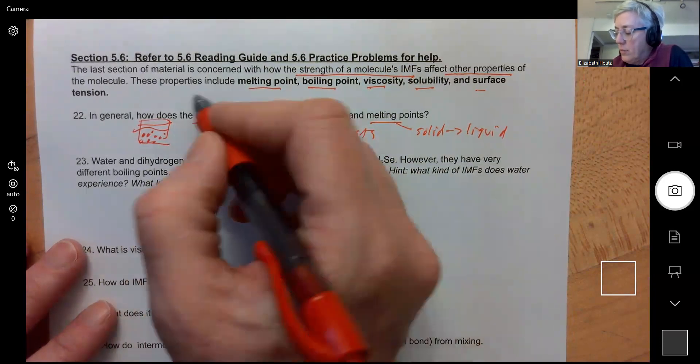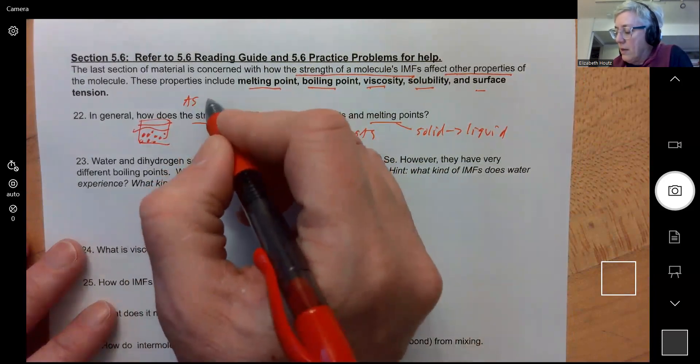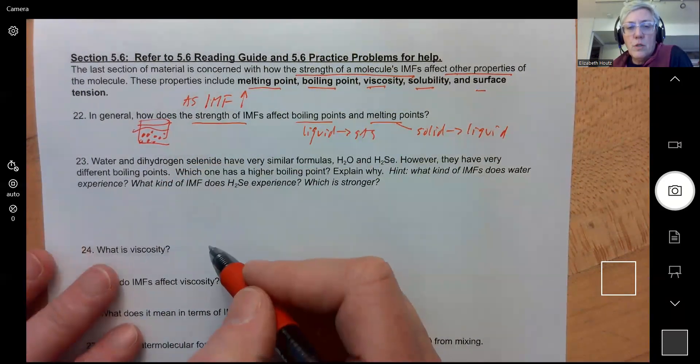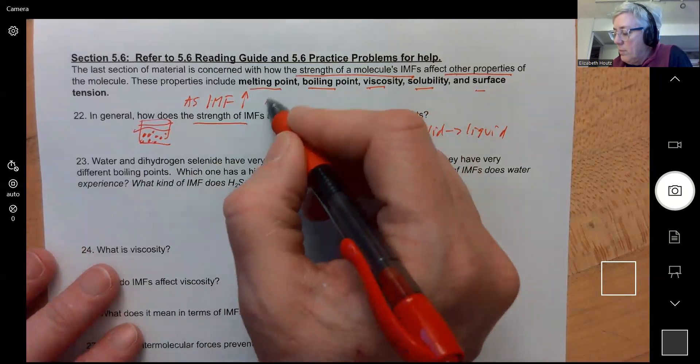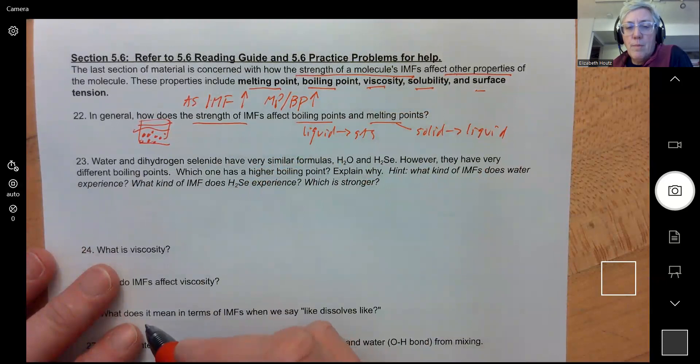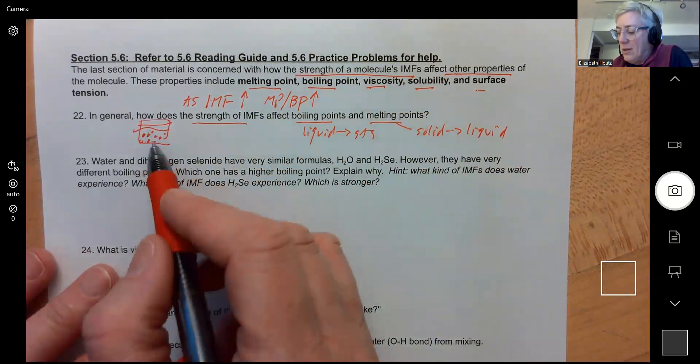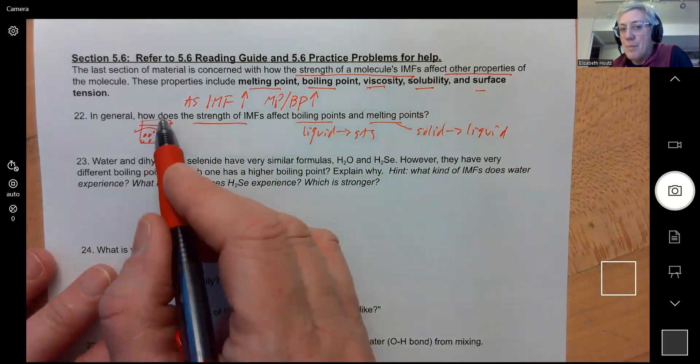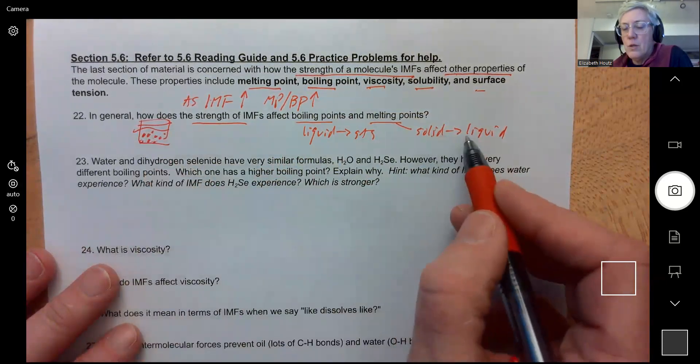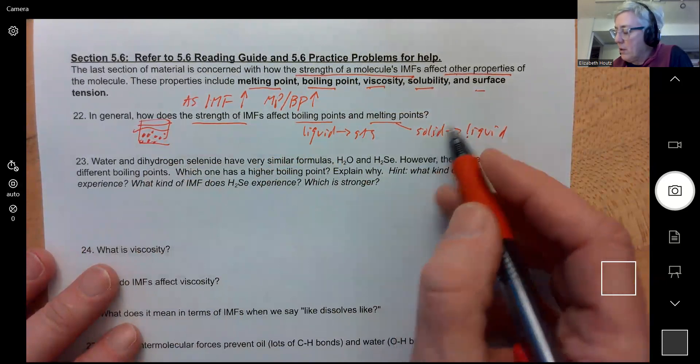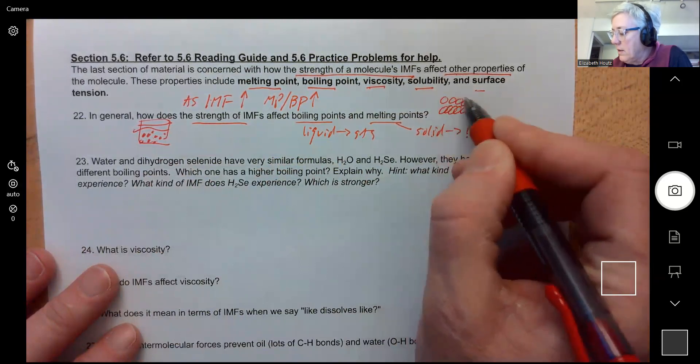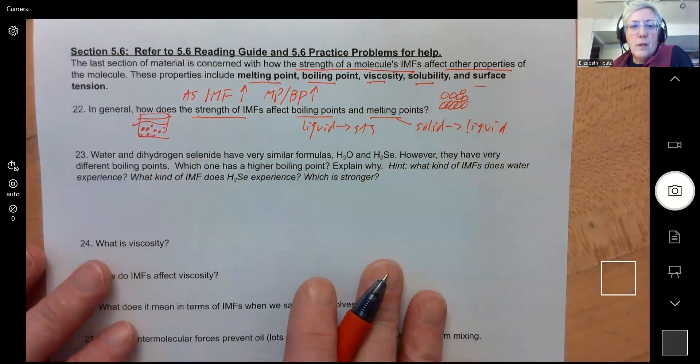So as intermolecular force strength goes up, as intermolecular forces get stronger, melting point and boiling points are also going to get higher because you're going to have to put in more heat to turn a liquid into a gas to break those intermolecular forces or to make a solid turn into a liquid to break the intermolecular forces holding the solid together. The stronger they're held together, the harder it's going to be to separate them.